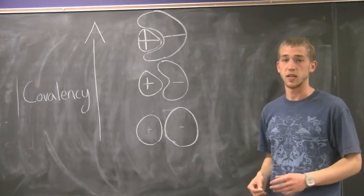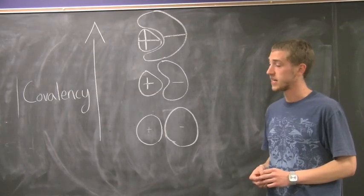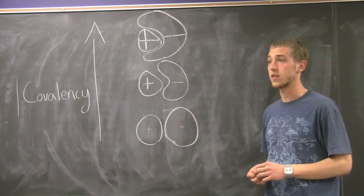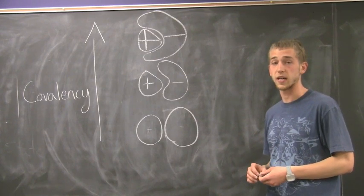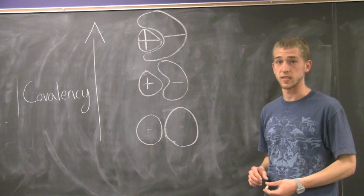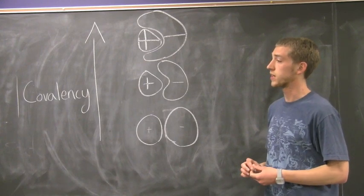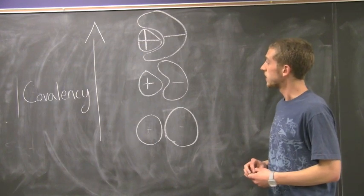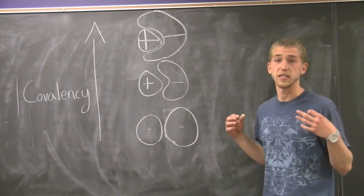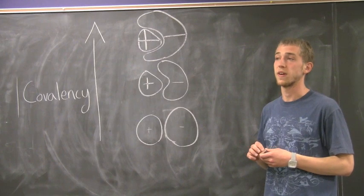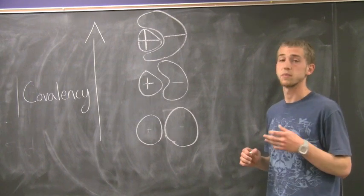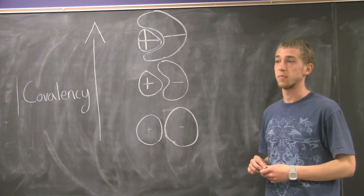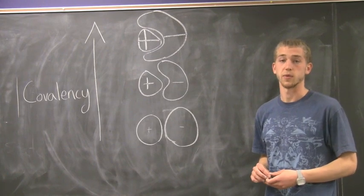Another thing he observed is that as the charges on either the cation or the anion, or both, increases, the tendency for the bonding to be covalent increases as well. This is due to the fact that as the charge becomes greater, the polarizability becomes greater as well.